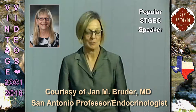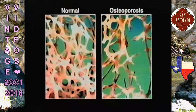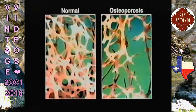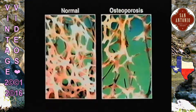So may I have the first slide please? Osteoporosis, as you may know, is a disease characterized by the loss of bone mass and also a loss or breakage in the microarchitectural struts in the bone, so that it increases the risk of developing fragility fractures. The slide on your right is osteoporotic and the slide on the left is a normal bone.